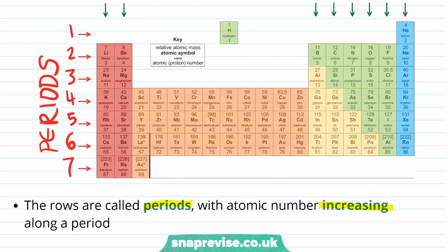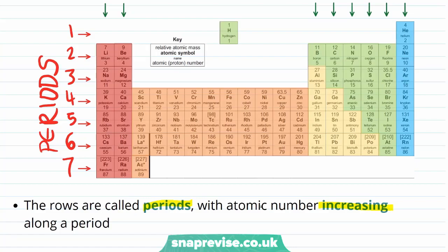And the periodic table also includes the atomic symbol and name of every element, alongside their relative atomic mass and their atomic number. This makes it a really useful reference point.